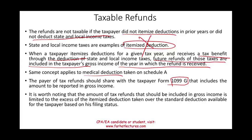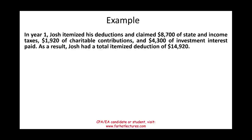It's worth noting that the amount of the tax refund that must be included is limited to the excess of the itemized deductions taken over the standard deduction available to the taxpayer based on their filing status. The best way to illustrate this is with an example. In year one, Josh itemized his deductions, claiming $8,700 of state and local income taxes, $1,920 of charitable contributions, and $4,300 of investment interest. As a result, his total itemized deductions were $14,920, and Josh took the itemized deduction.